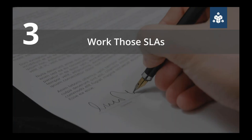Our third tip — and we hear about this issue from customers all the time — is that you have to make sure you have SLAs with all of your providers and know generally what's in them. It's a lot of fine print, but it's really worth knowing what to expect when a problem comes up. You're depending on these providers to run huge parts of your business, so you need to know what will happen if their app goes down or has a recurring problem — and you'll want that in writing.